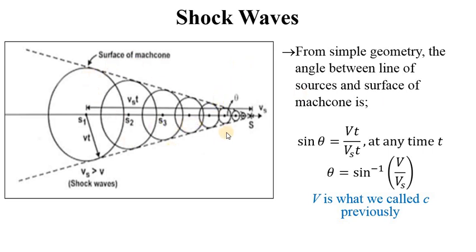To understand shock waves geometrically, consider this diagram. The tangential surface of the Mach cone is shown, and the path traced by the source is visible. From simple geometry, we know that a radius touching a tangent forms 90 degrees at that point. This makes the path of the source the hypotenuse and the wave radius the opposite side relative to the angle theta we want to find. So sine of theta equals opposite over hypotenuse, which is Ct over Vst.